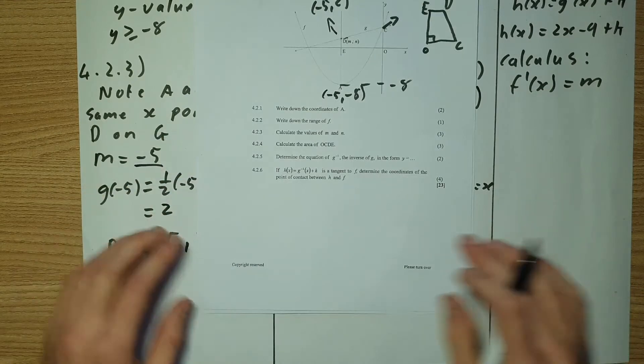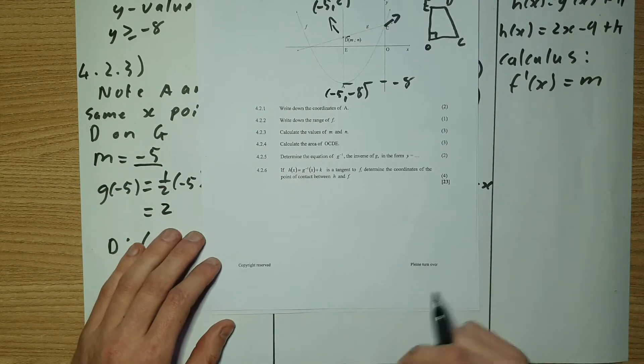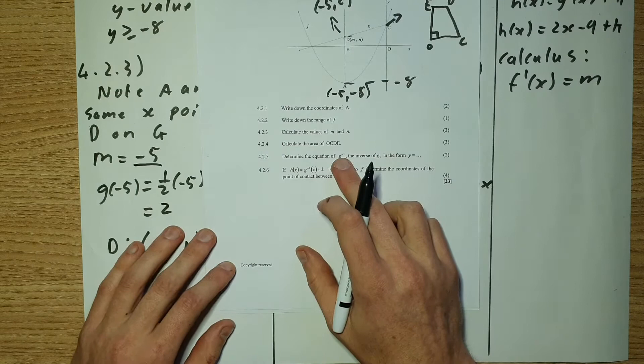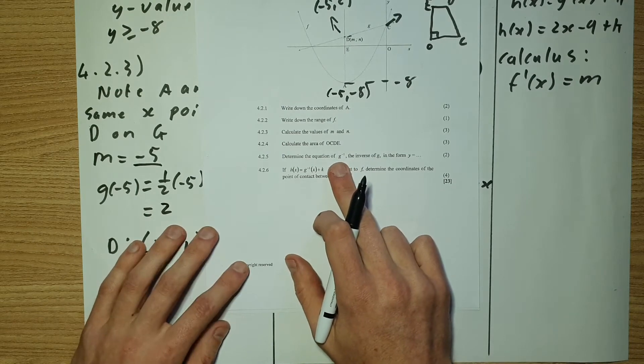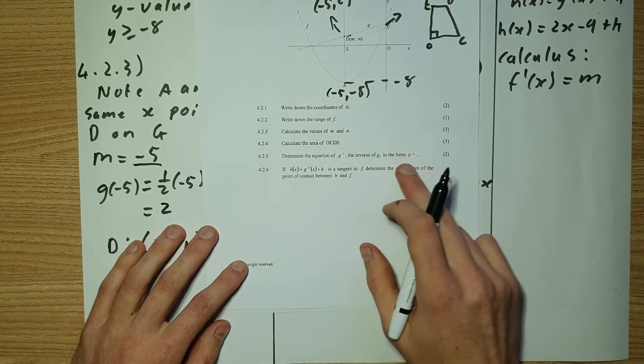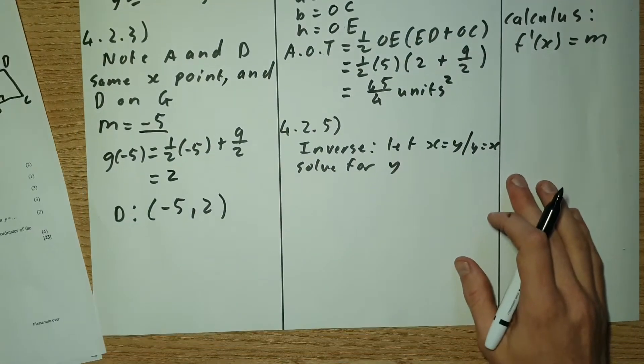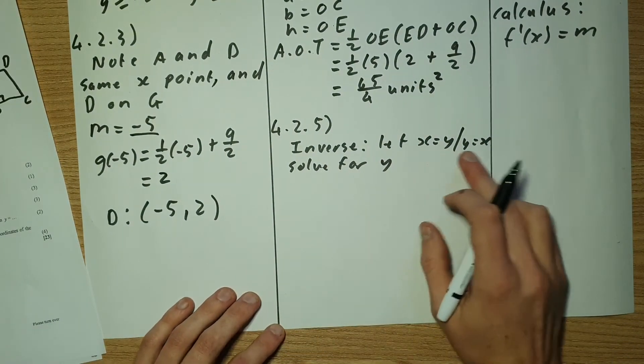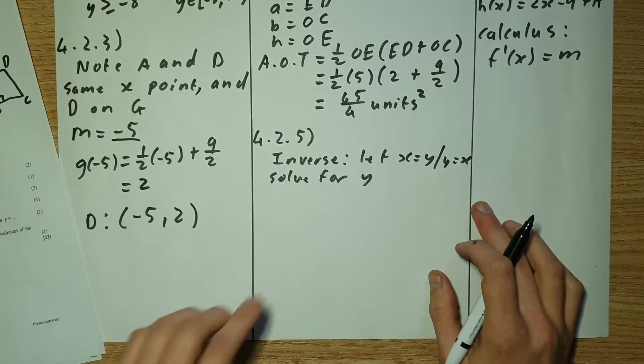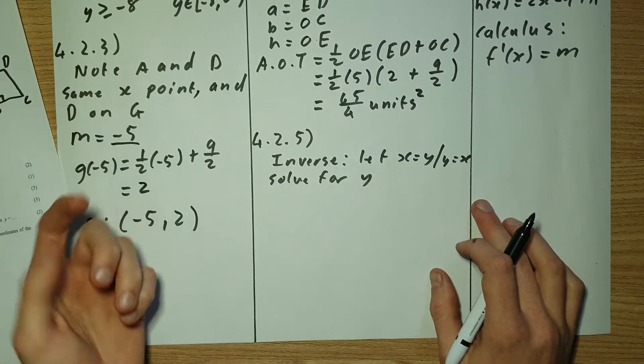Almost done. 4.2.5 says determine the equation of G to the power of negative one. So the inverse of G in the form of Y equals something. So now when we find inverse, we let X equal to Y and Y equal to X and then solve for Y.